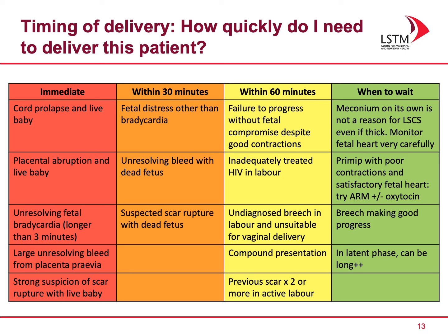Having decided to deliver a woman, how quickly does this need to be done? An emergency means immediate delivery — things like a cord prolapse where the baby is still alive, a placental abruption where the baby is alive, unresolving fetal bradycardia lasting longer than three minutes, a large unresolving bleed from placenta praevia, or a strong suspicion of a scar rupture with a live baby.